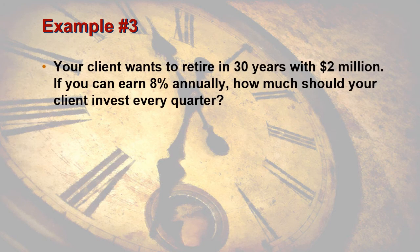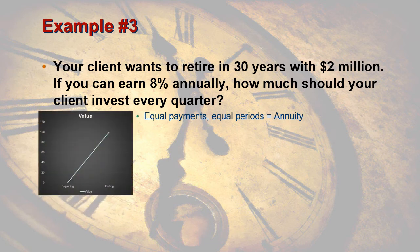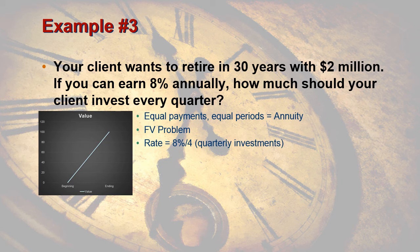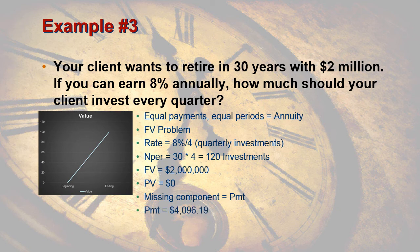Here's the third example: your client wants to retire in 30 years with $2 million. You can earn 8% annually. How much should your client invest every single quarter? We're dealing with equal payments in equal periods, so we've got ourselves an annuity problem. We're starting with nothing and going to end with something, so we are dealing with a future value problem. Our rate is 8% annually, but since we're making quarterly investments we drill it down to 2%. Since we're making 30 years worth of quarterly payments, we're going to make 120 payments total. The future value we're looking for is $2 million, and the present value — we have nothing to begin with. Our missing component ends up being our payment. How much are we going to invest every single quarter? We're going to invest a little over $4,000.